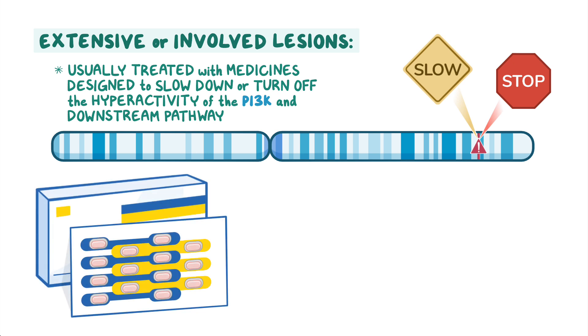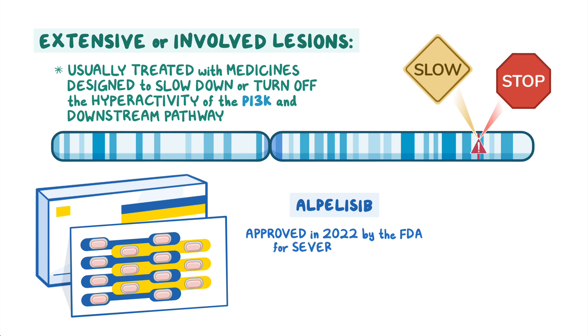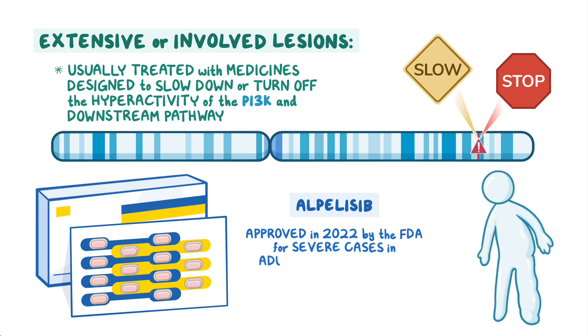Several different medicines have been used, but Alpelisib was approved in 2022 by the FDA as a treatment for severe cases of PROS in adults and children two years of age or older.